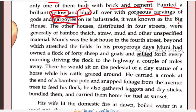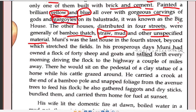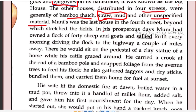The rest of the houses were distributed across four streets and had thatched roofs — roofs made of straw, mud, and unspecified materials — just to prevent water from entering through holes. These people were very poor. Muni's was the last house in the fourth street, right at the edge of the village. Beyond Muni's house was the field, and after the field was the highway.